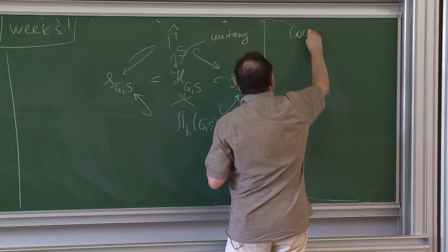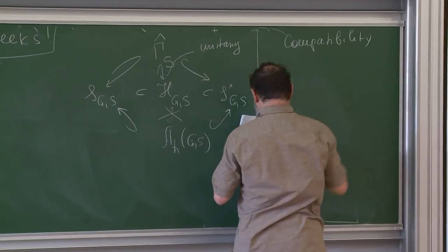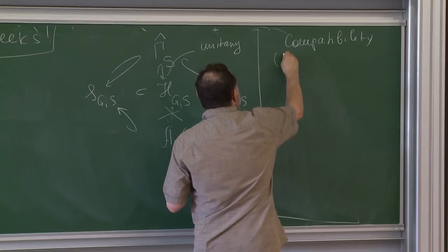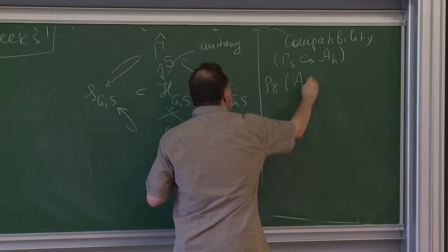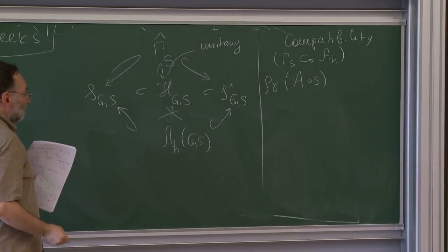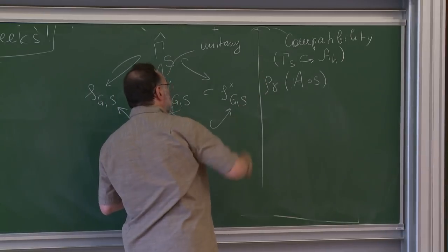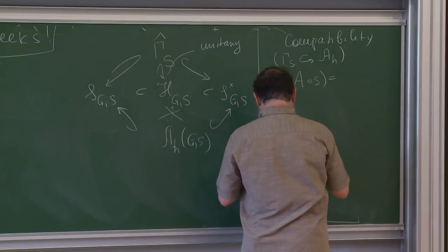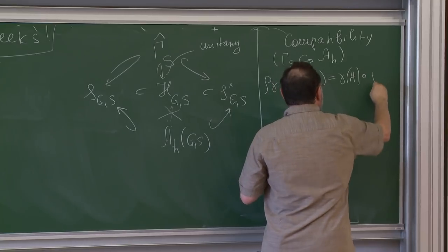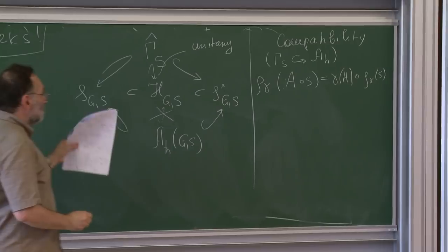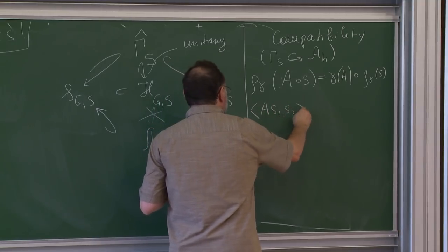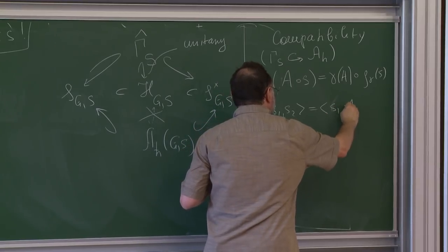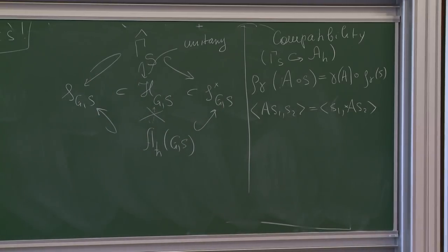The compatibility condition is: if you take any element of the Schwartz space, act on it by an algebra element A, then act by a representation of gamma, this equals acting by gamma(A) on rho(gamma)(s). This is the compatibility of the discrete group action and the algebra action. Also, don't forget it's a star representation. This is the complete package of what we want to do.